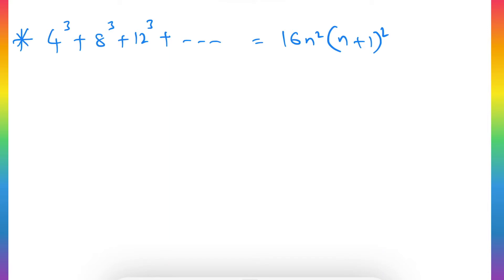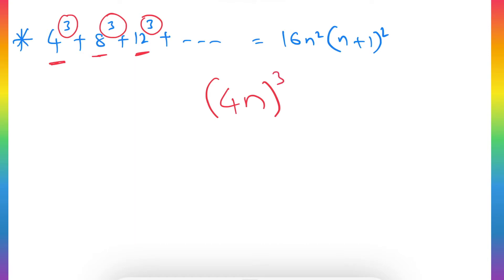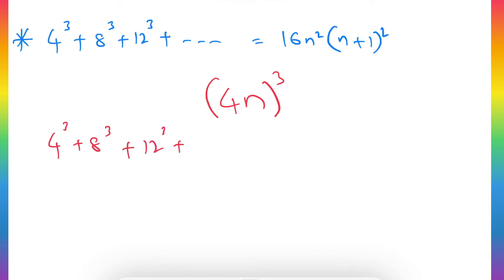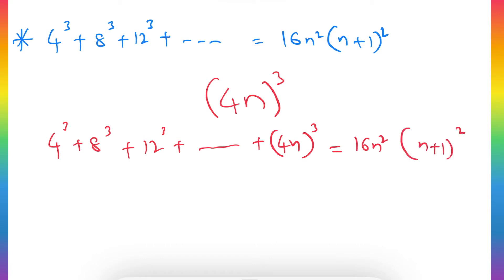Observe the bases: 4, 8, 12 — this is clearly the 4 times table, so that is 4n. For every term, cube is applied, so we can write the nth term as (4n)³. We can now rewrite the question as: 4³ + 8³ + 12³ + ... + (4n)³ = 16n²(n+1)².